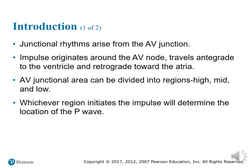The AV junctional area can be divided into different regions: high, mid, and low. Whichever of these regions initiates the impulse will determine the location of the P wave.